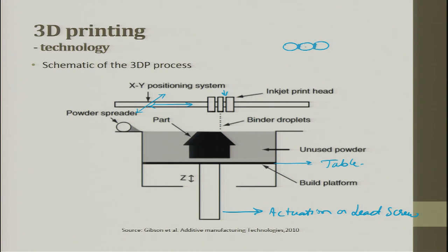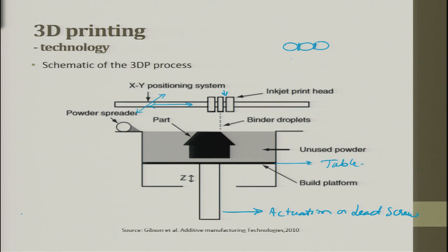The binder can fall on top of the powder and connect the powder particles, which are the building blocks. The powder is spread on top of the table at one layer thickness. The inkjet head moves in X and Y and the binder is dropped at exact locations where the part has to be built. The part is called a green part because the binder might not have very high strength. After this, the part can be immersed in a polymer varnish so that the outer layer is stiffened. It is only meant to give you a form shape by this process.